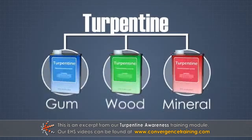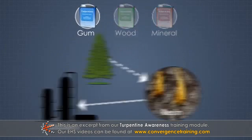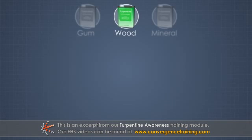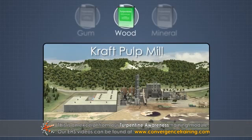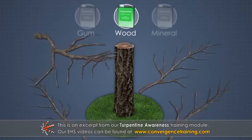Turpentine can be produced in several different ways. Gum turpentine is produced by distilling resin obtained from living trees. Wood, or sulfate, turpentine is mostly obtained as a byproduct of the kraft chemical pulping process, though wood turpentine can also be obtained from old pine stumps and branches.